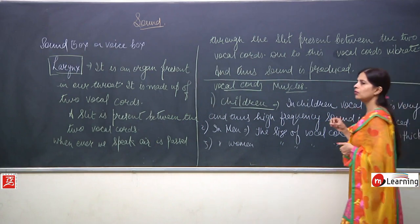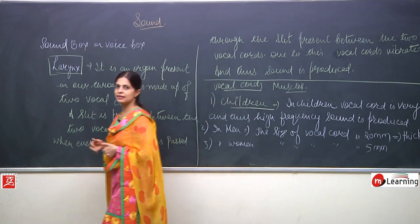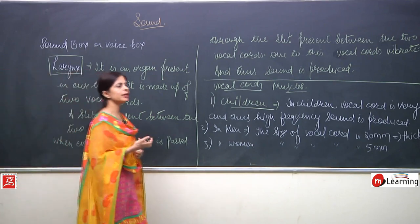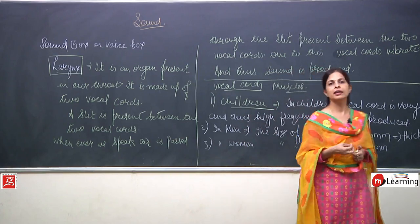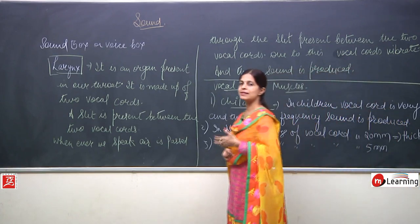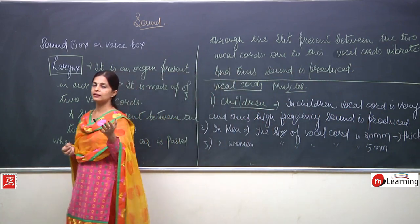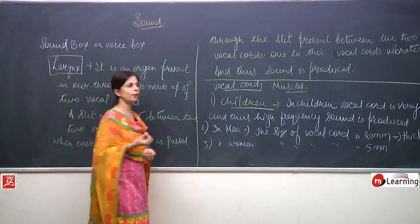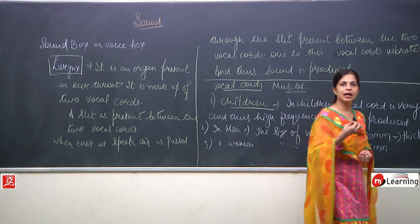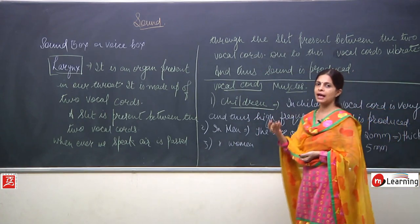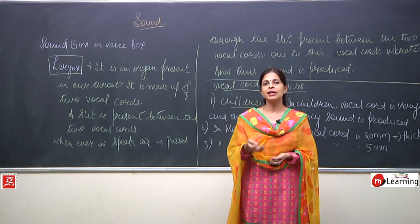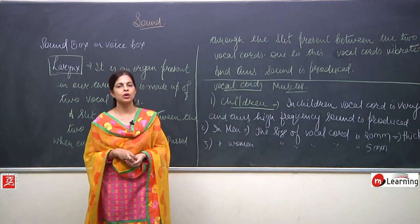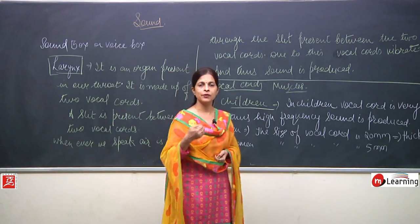This is about how sound is produced and why it differs. Whenever we recognize a sound — like that of a bird or a lion — it is all about the difference of frequency and pitch. That is the reason we can identify that this sound is of a bird and this sound is of a lion. We can also understand the difference between a man's voice, a child's voice, and a woman's voice because of the difference in frequency and pitch.